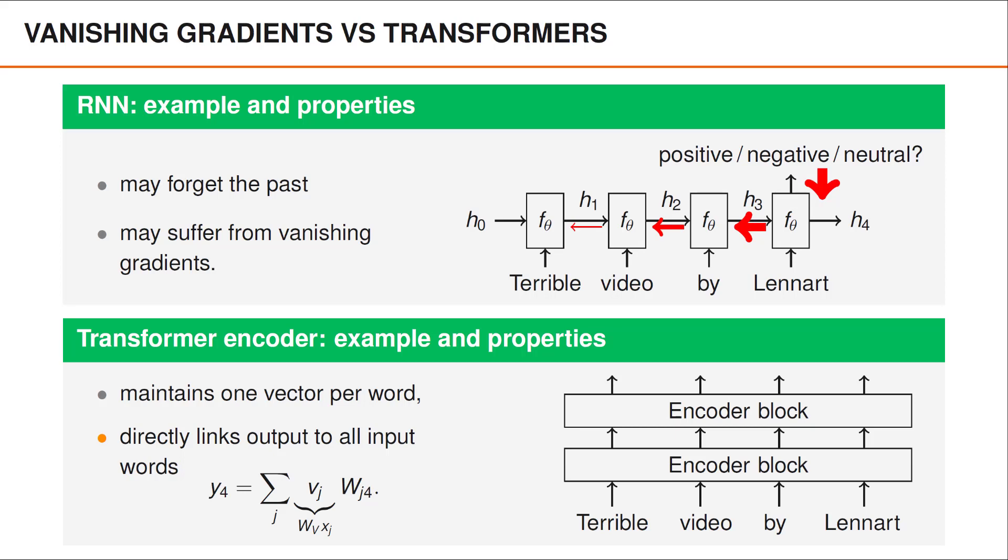As you can see, the connection between the output at time 4 and the input at time 1, here denoted x1, is much more direct compared to in an RNN.